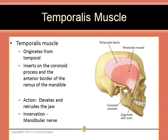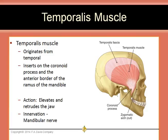The temporalis muscle originates from the temporal bone and the temporalis fascia. It inserts on the coronoid process and the anterior border of the ramus of the mandible. It acts to elevate and retrude the jaw. The posterior diagonal bands of the muscle retrude the mandible and pull it backward, while the vertical bands of muscle elevate the mandible and close it.